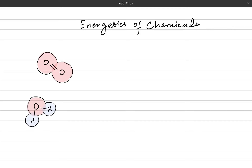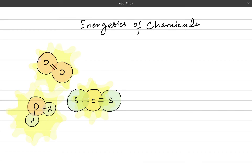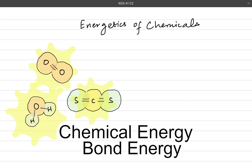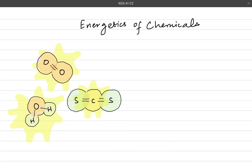Here we will deal with two types of energies. One is the chemical energy trapped within the chemical bonds of molecules. This chemical energy is actually a reference to the bond energies within those molecules, whether those are covalent bonds, ionic bonds, or metallic bonds. There are attractive forces involved, and that bond energy is involved in those compounds.